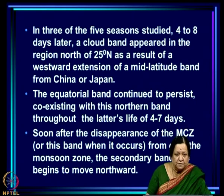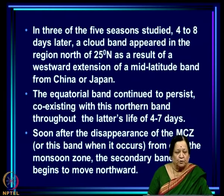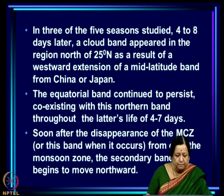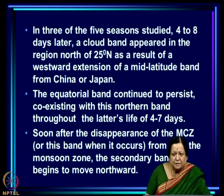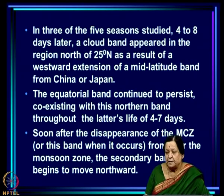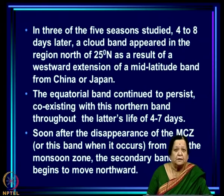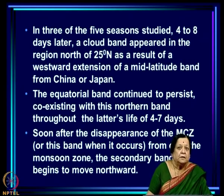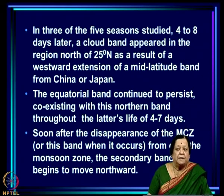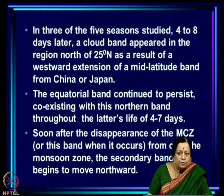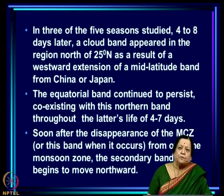In summary: first, establishment of the CTCZ over the monsoon zone; then for 2 to 4 weeks it fluctuates within the monsoon zone; then it disappears. A few days after disappearance, a band appears again at 90°E but does not necessarily penetrate west of 90°. Another band appears — north of 25°N extending to China or Japan — which we call the Chinese connection.